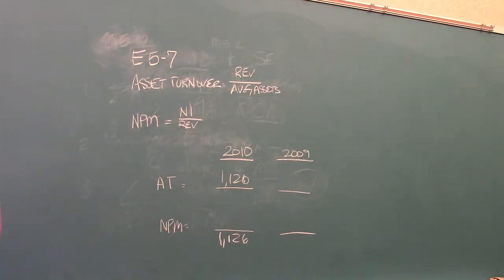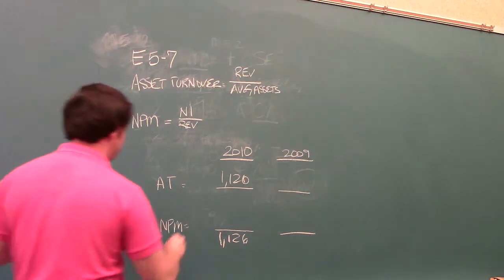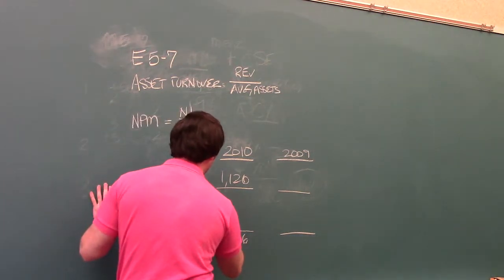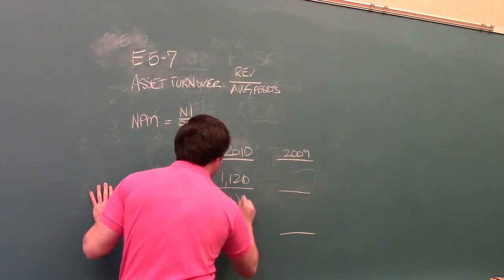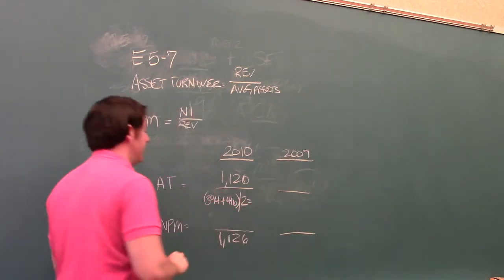The next thing that we want is average total assets. The total assets for 2010, the beginning and end of the year, is 394 and 416. So if we take 394 plus 416 and divide it by 2, we'll get the average total assets there.